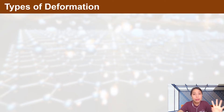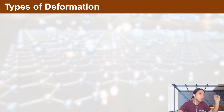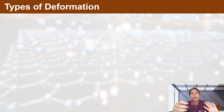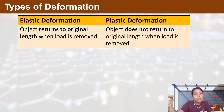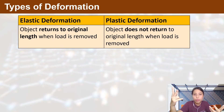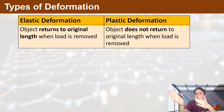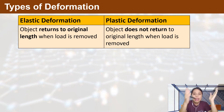We already looked at types of deformation — we looked at curves, graphs, equations, and experiments. You can basically summarize it to this: materials can experience two types of deformation, elastic and plastic deformation.